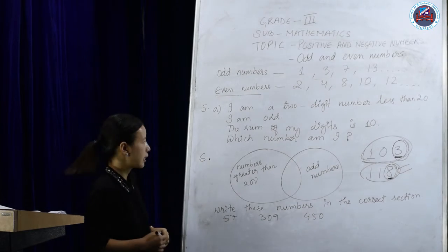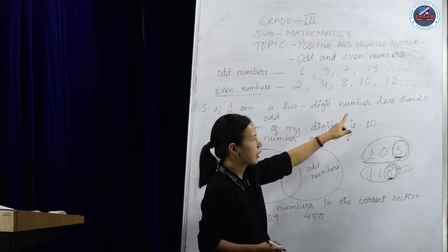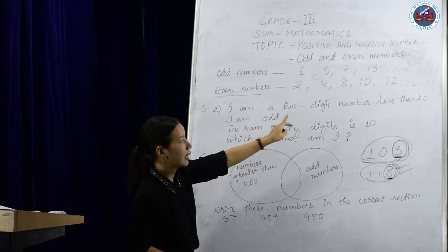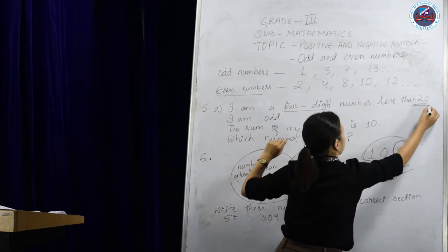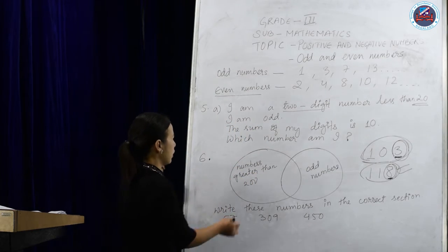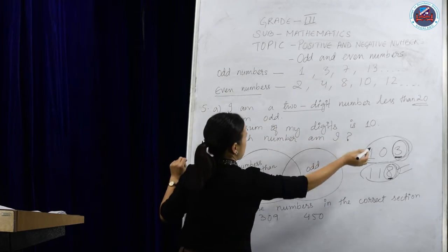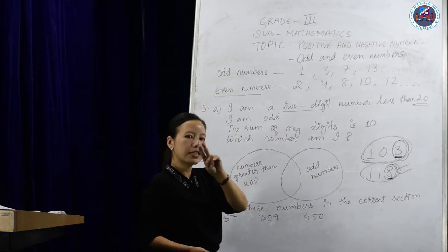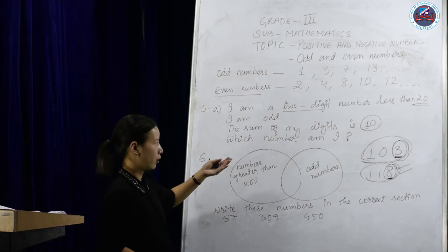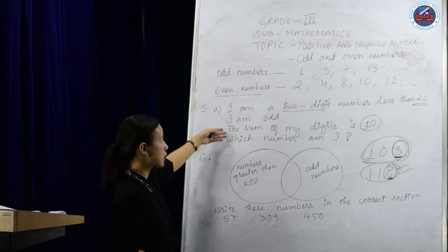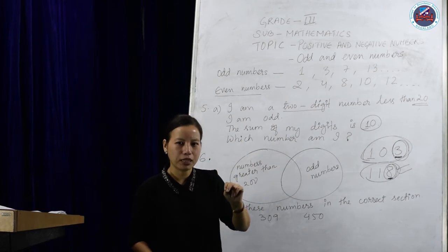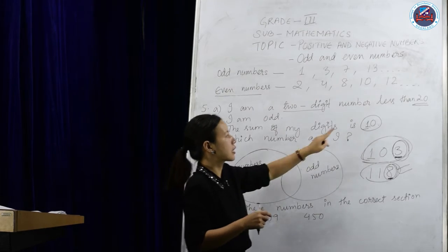These questions are taken from your exercise. It says: I am a two-digit number less than 20. I am odd. And the sum of my digits is 10. Which number am I? So the number should be odd, less than 20, and when you add the two digits, the sum has to be 10.